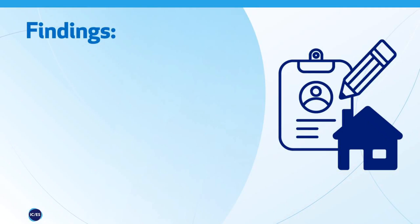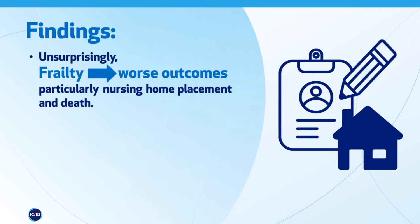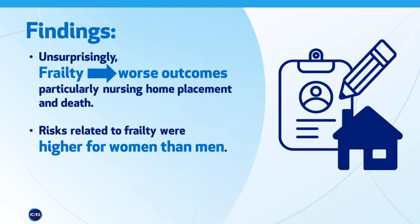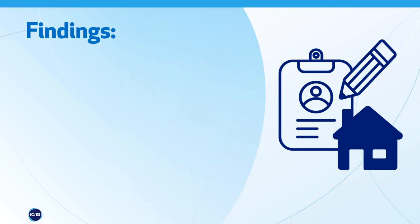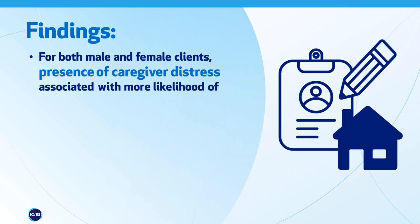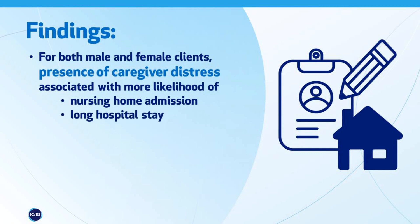Not surprisingly, the higher the level of frailty, the higher the risk for all health outcomes we looked at, in particular nursing home placement and death. The risks associated with frailty were higher for women than men. We also found that having a distressed caregiver was an important predictor on its own of two key outcomes: the likelihood of going into a nursing home and the likelihood of a prolonged hospital stay.